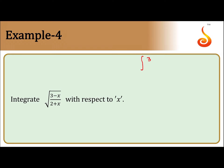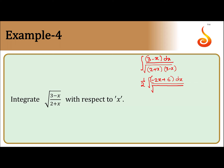We rationalize; we get (3 minus x) dx divided by the square root of (2 plus x)(3 minus x). We multiply and divide by 2, getting 1/2 times (-2x plus 6) dx under the square root. The integral inside becomes (-x² plus x plus 6).